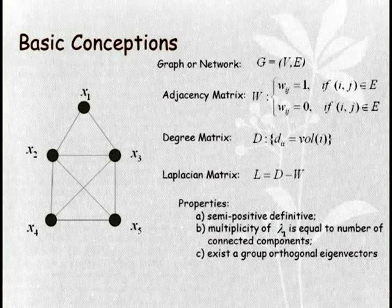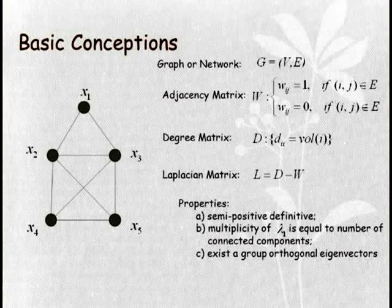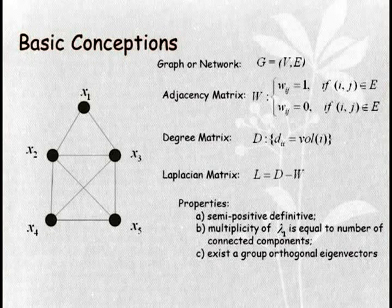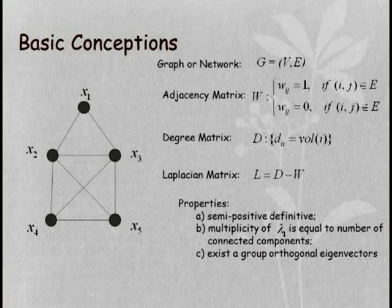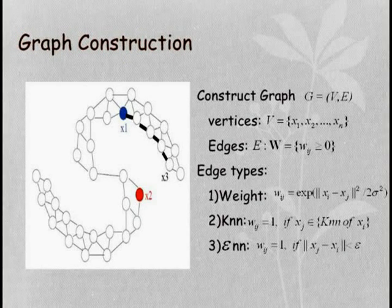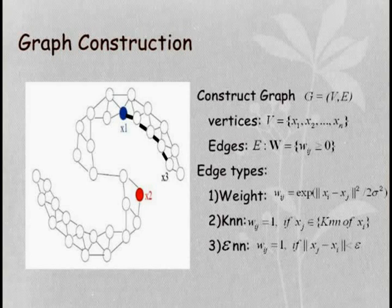Here is the basic concept of graph-based learning. We can see the definition of the graph, the adjacency matrix, degree matrix, and the Laplacian matrix. Here are the properties of graph-based models. And here is about graph construction — the steps of how to construct the graph and the edge types.